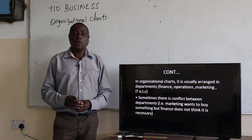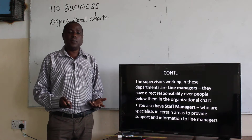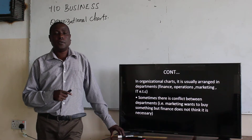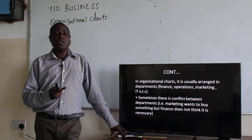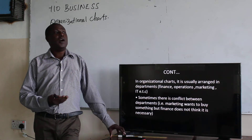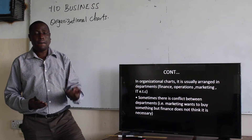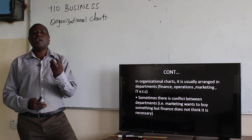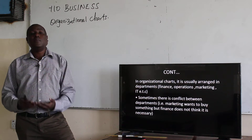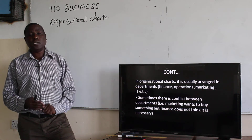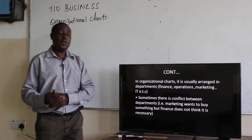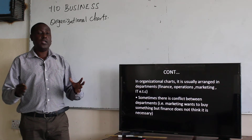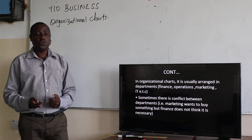Sometimes there is a conflict between departments. For example, the marketing department wants to buy something, but the finance department does not think it is necessary. The marketing department is supposed to look for customers and handle sales of products. The finance department receives money and gives money to all other departments. So if the marketing department wants to buy a van to facilitate their movement to the market, but the finance department feels it is not necessary and suggests they hire a van instead — these are conflicts between two departments.